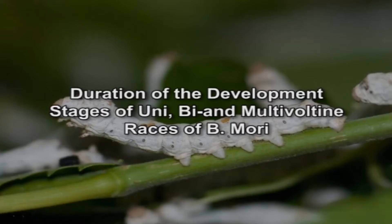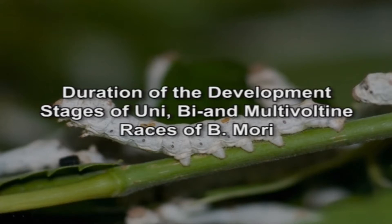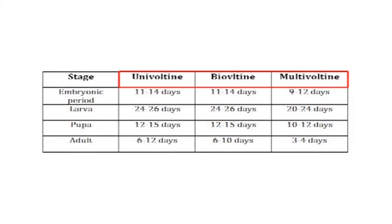The duration of the development stages of uni-, bi- and multivoltine races differs in Bombyx mori. Comparing these three, the multivoltine races have the shortest life span. For example, the embryonic period is 9 to 12 days, larval period is 20 to 24 days, pupal period is 10 to 12 days, and the adult period is 3 to 4 days in multivoltine races.